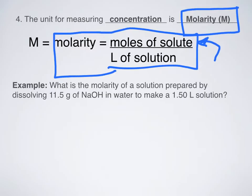So let's try solving this example. What is the molarity of a solution prepared by dissolving 11.5 grams of NaOH to make a 1.50 liter solution? All right, so let's use molarity to figure this out. So I have molarity equals moles over liters. I have something right here in grams. So I have 11.5 grams of NaOH. So how can I convert that into moles?